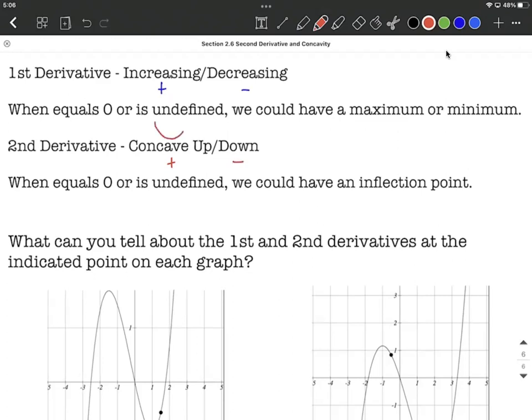All right, concave up looks like the bottom of a bowl. Concave down looks like the top of an umbrella, basically.